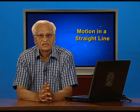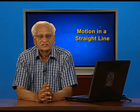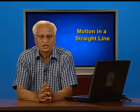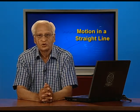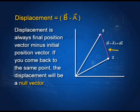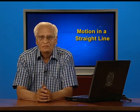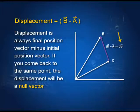We start with displacement. You know already that displacement is the difference between the final position vector of a body and the initial position vector of a body. We shall denote displacement by capital S with an arrow on it, whereas the distance covered we shall show by small s.